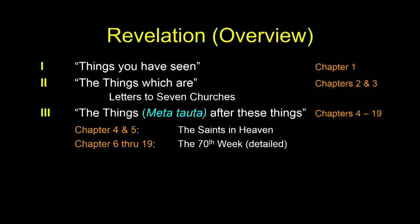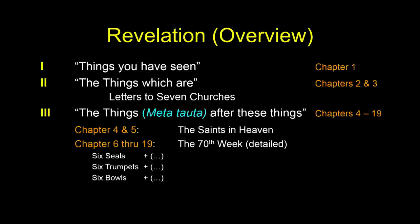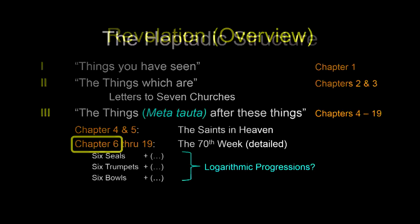Then comes chapter 6 through 19, which details the period of time we know as the 70th week of Daniel. The 69 weeks are shockingly, precisely fulfilled. But there's one week — a group of seven years — left. They will include six seals that are opened, six trumpets that are blown, and six bowls. We'll be zeroing in on chapter 6, but it's important to understand what precedes it.